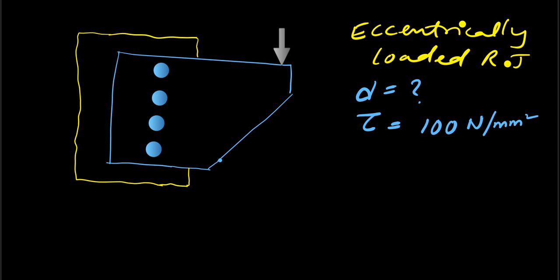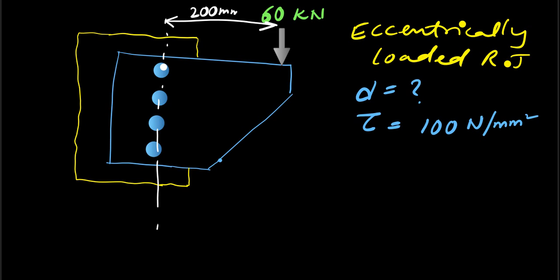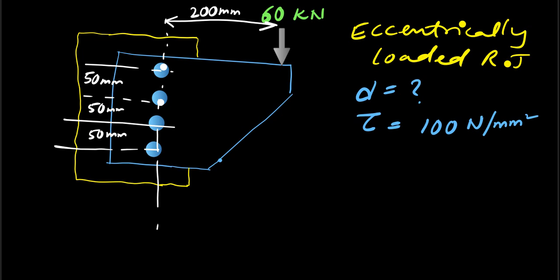The applied load is given as 60 kilonewtons. The distance from the center of the rivets to the load — called the eccentricity — is 200 millimeters. The distance from one rivet to the next is 50 millimeters each, so from rivet to rivet it is 50, 50, and 50 millimeters.